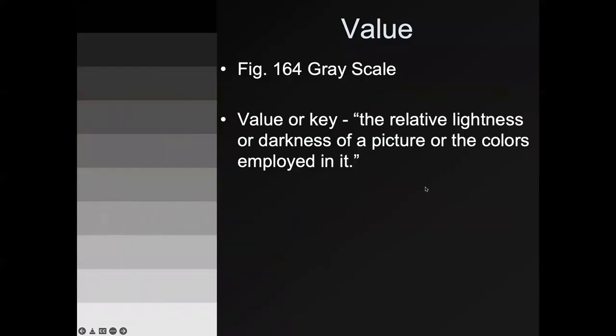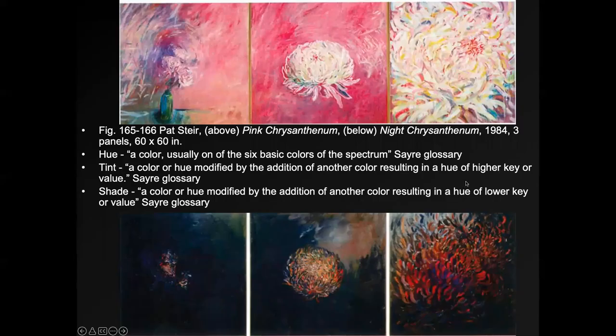When talking about value, you're naming the relative lightness or darkness of a picture and the colors employed in it. If something has a high value, it has lots of light colors. If it's a low value, it has lots of dark colors. You can mix value with color and get some pretty interesting effects.